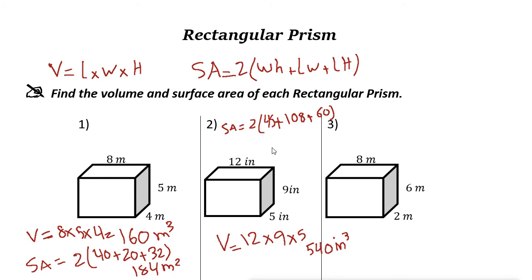If you add them up, so 45 plus 108 plus 60, then times 2, you get 426. So the surface area of this one is 426 square inches.